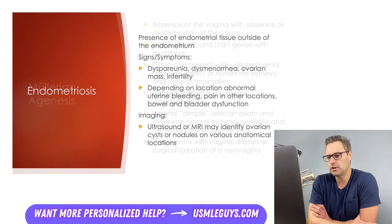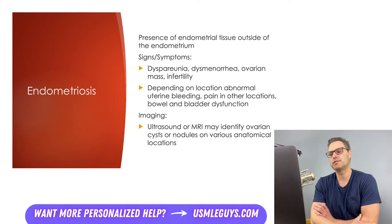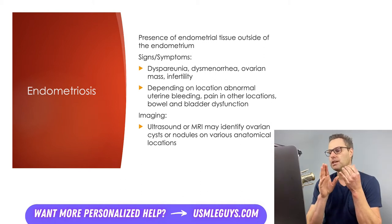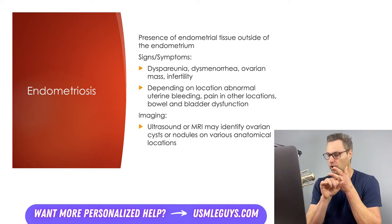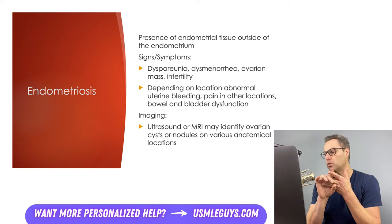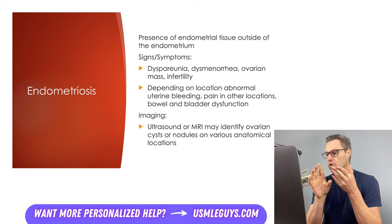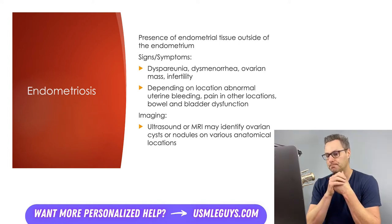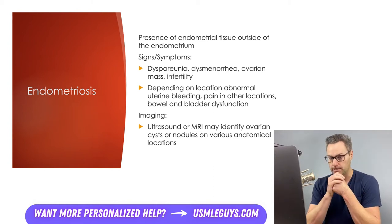Moving on to endometriosis, defined as the presence of endometrial tissue located outside of the endometrium. This ectopic tissue can be found at various sites, most commonly in the ovaries, the anterior cul-de-sac (between the bladder and uterus), the posterior cul-de-sac (between the uterus and rectum), the posterior broad ligaments, the utero-sacral ligaments, the uterus, the fallopian tubes, and GI areas like the sigmoid colon and appendix. There are also case studies where tissue is found in many other organs.